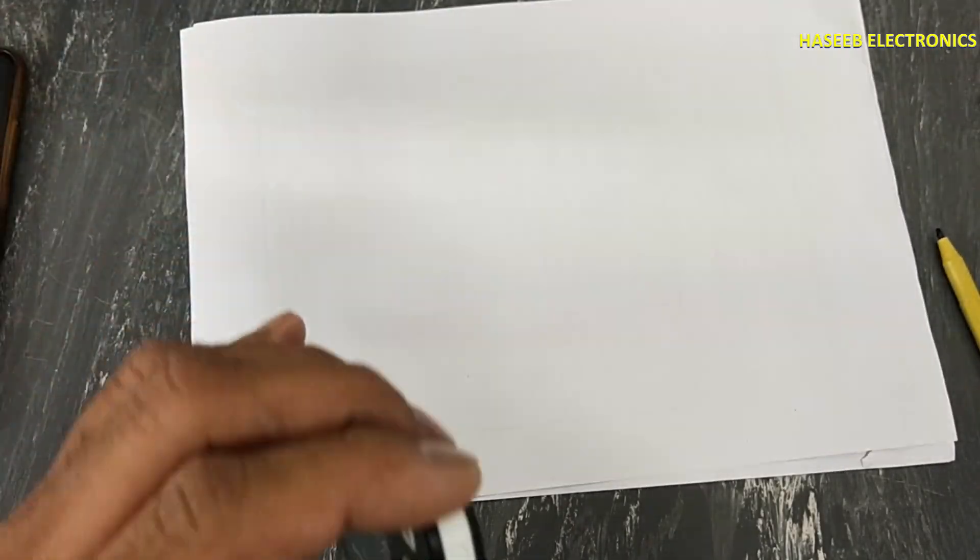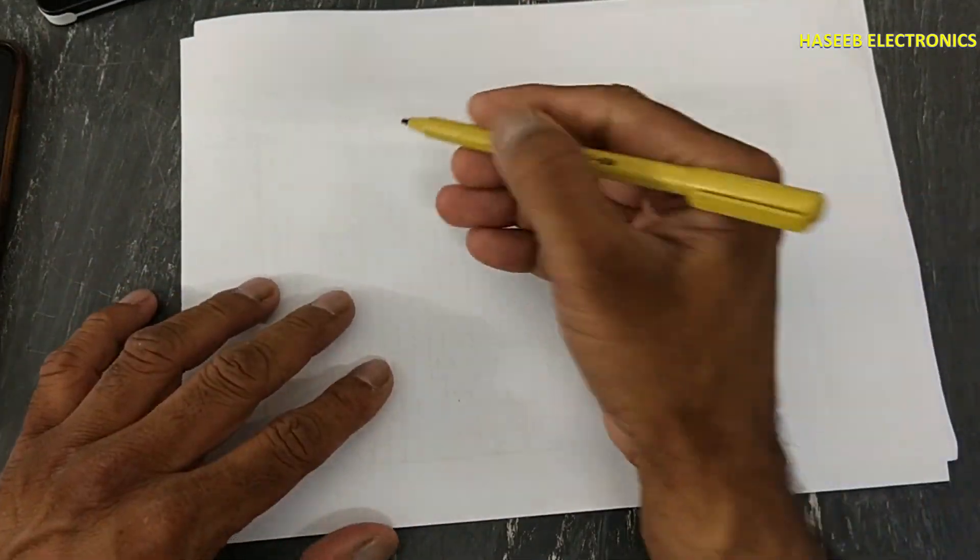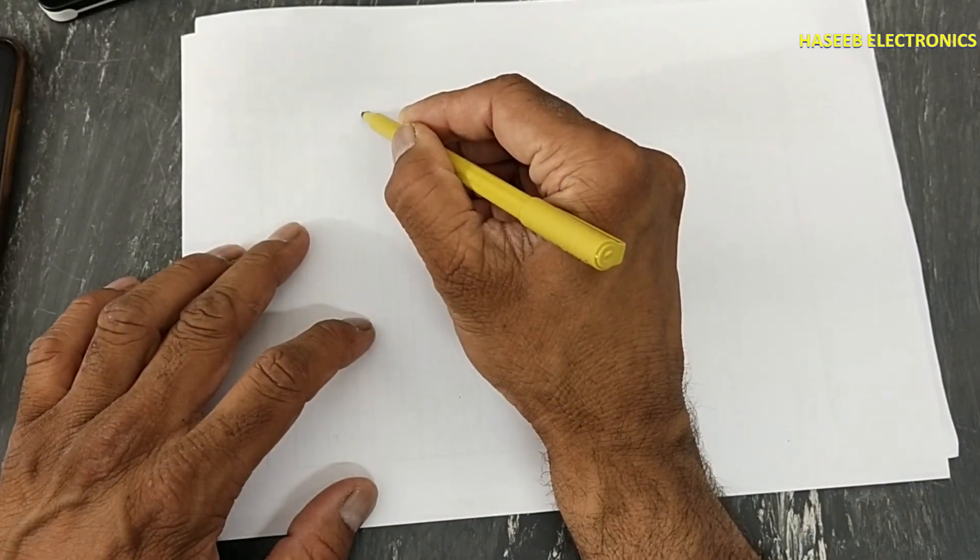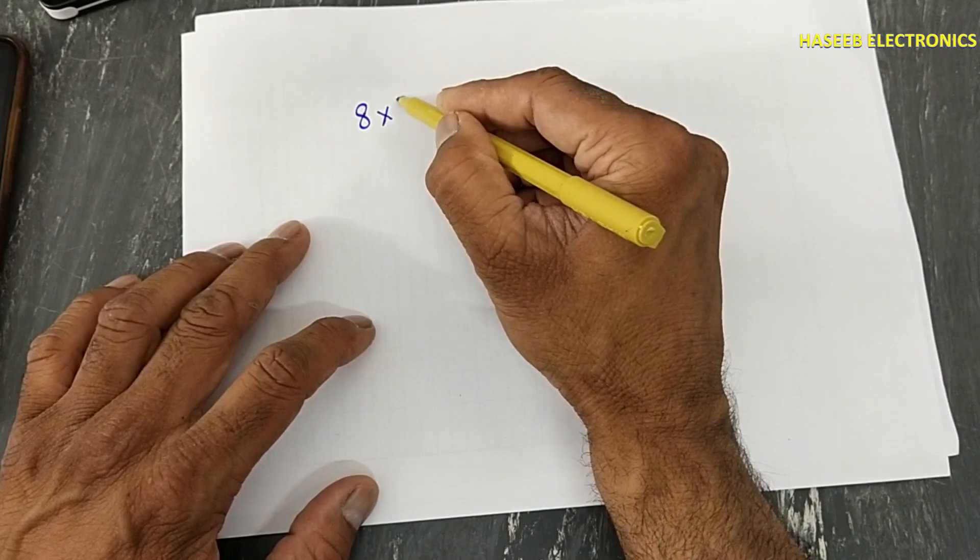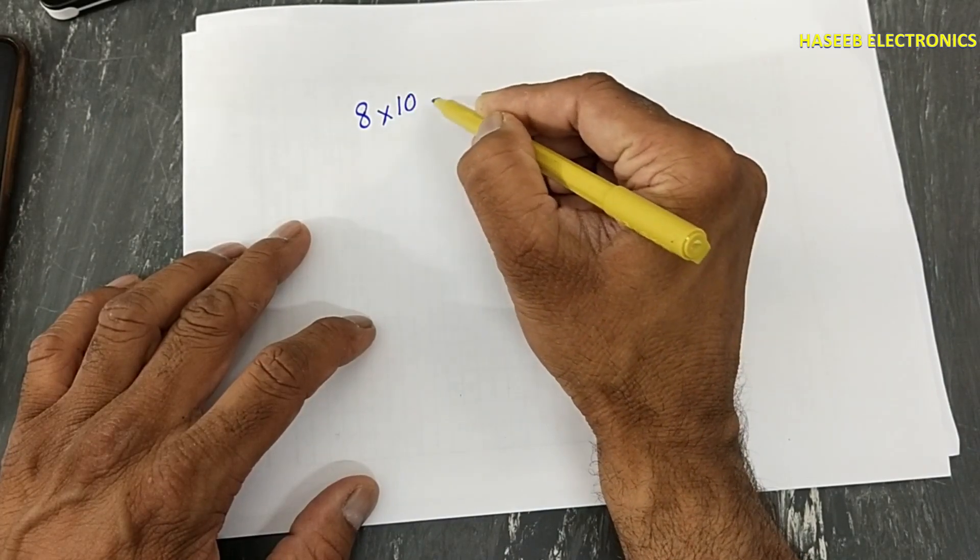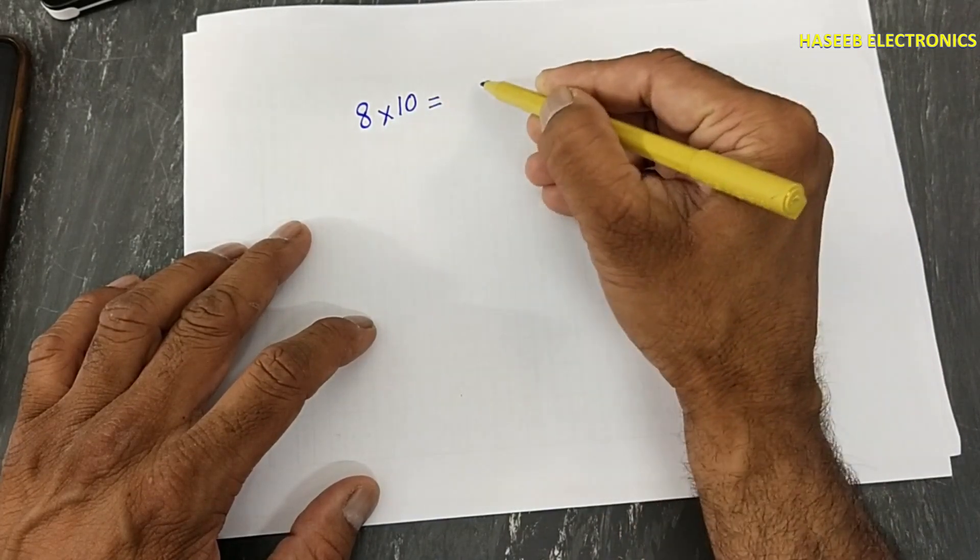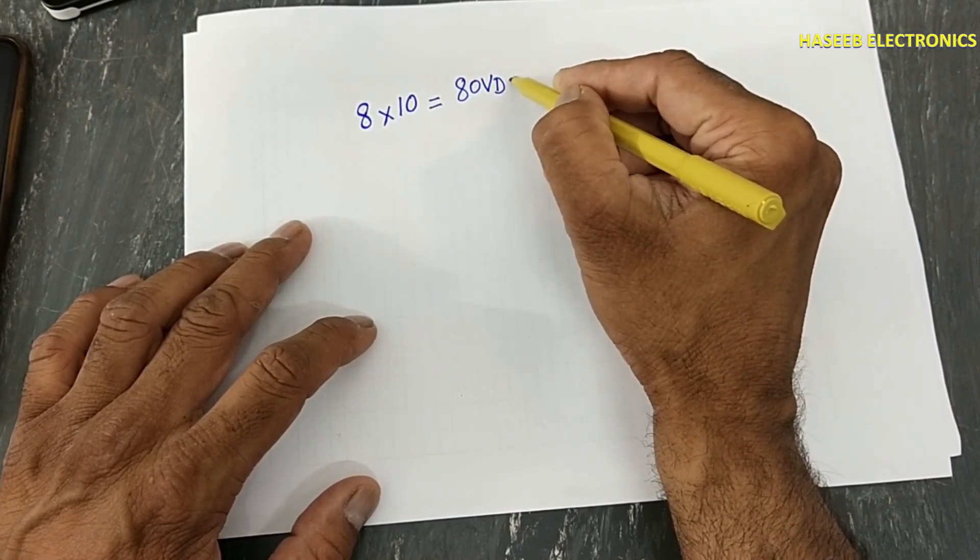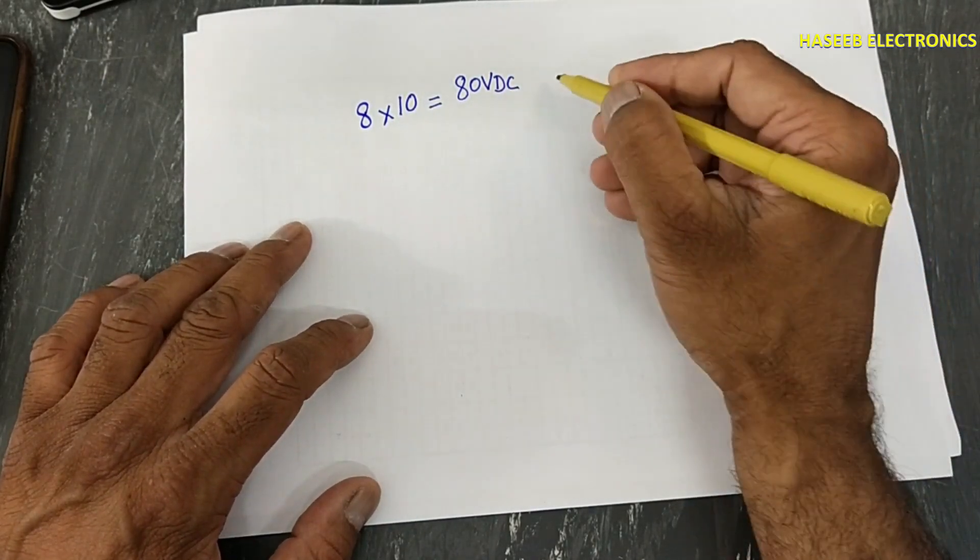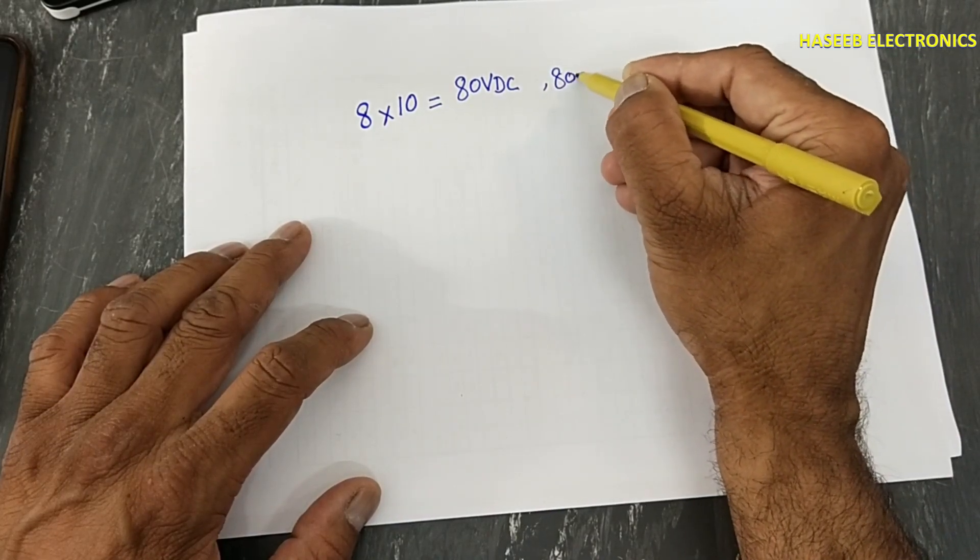This method will be applicable to any oscilloscope. Number of grids, 8. Voltage, 10 volts. Maximum signal, 80 volts DC, or we can say 80 volts peak.